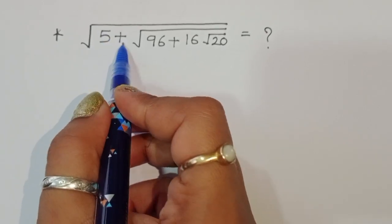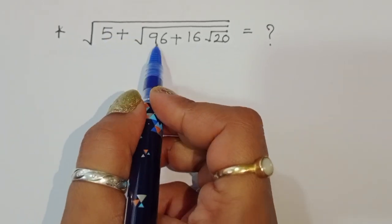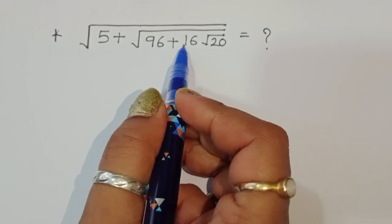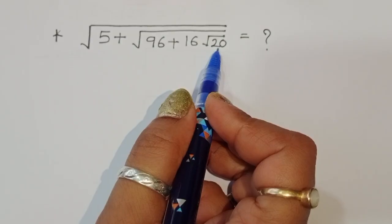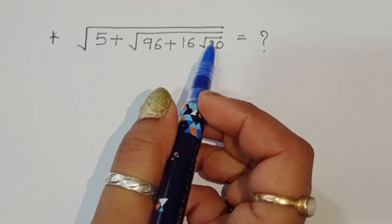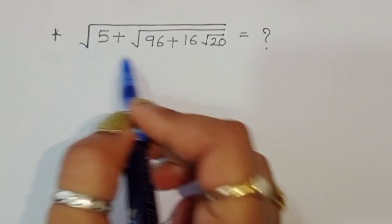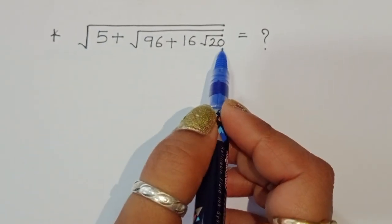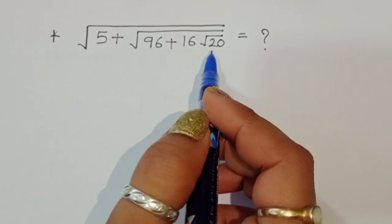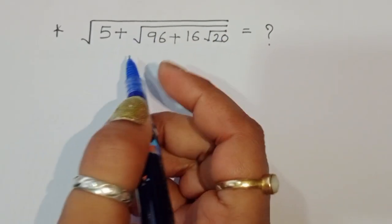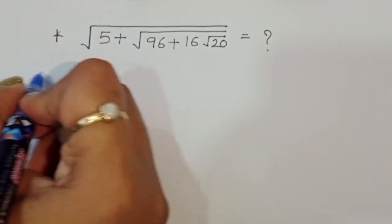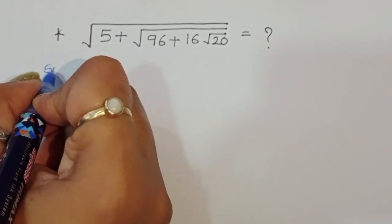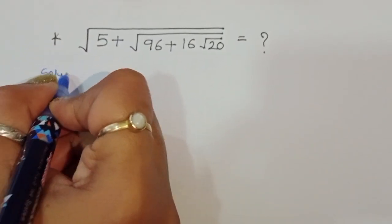We are given square root of 5 plus square root of 96 plus 16 plus square root of 20. We have to find out the value of this term without using a calculator. Let's start the solution.